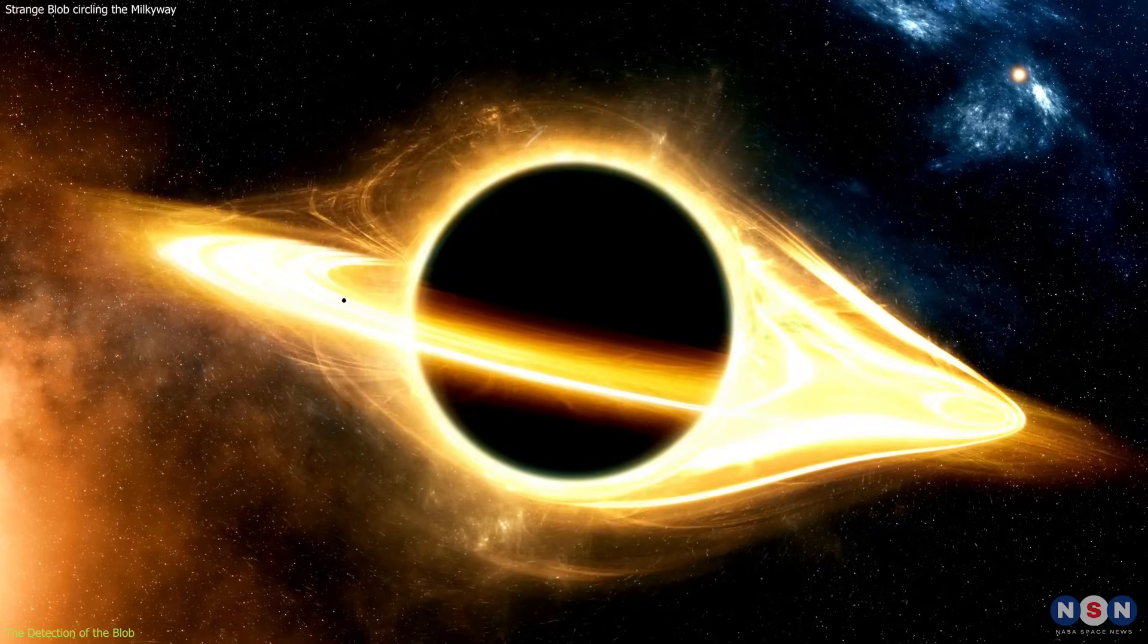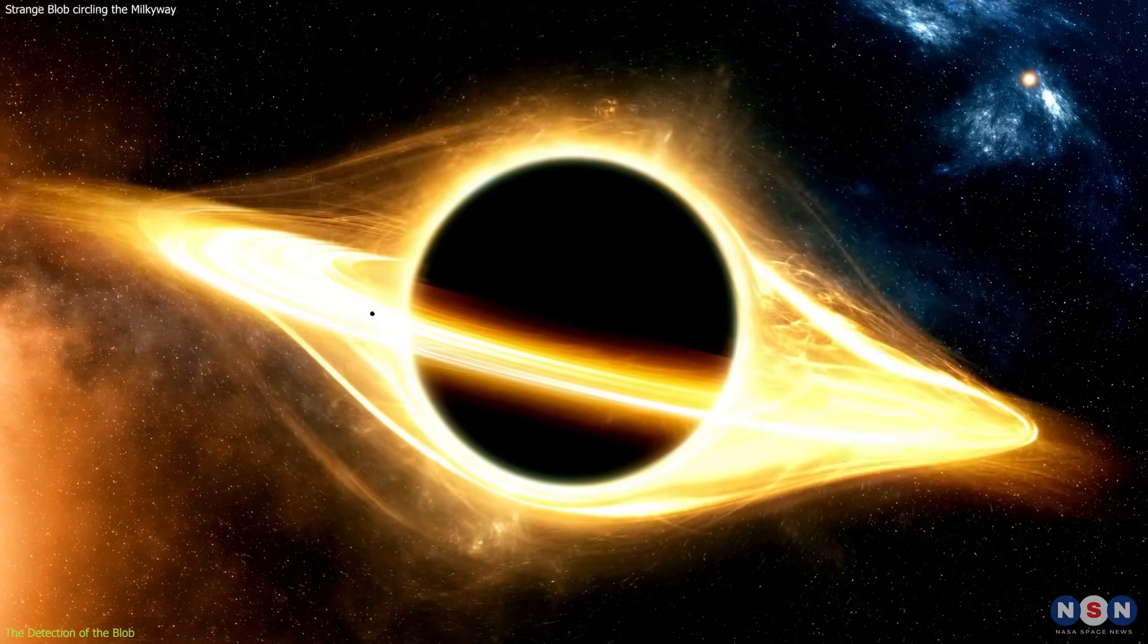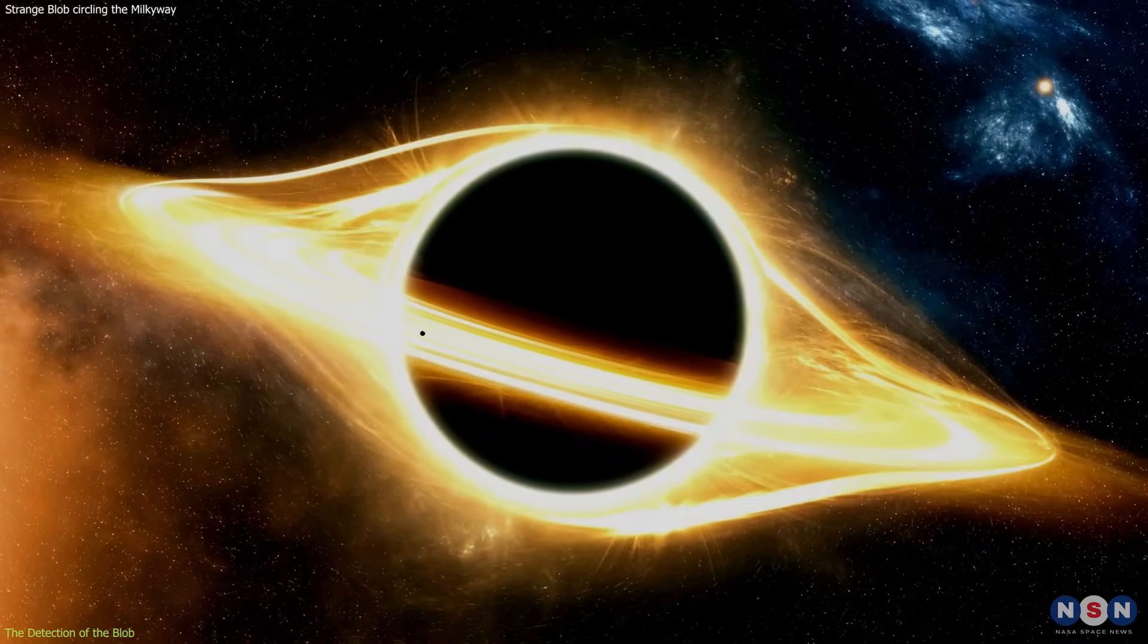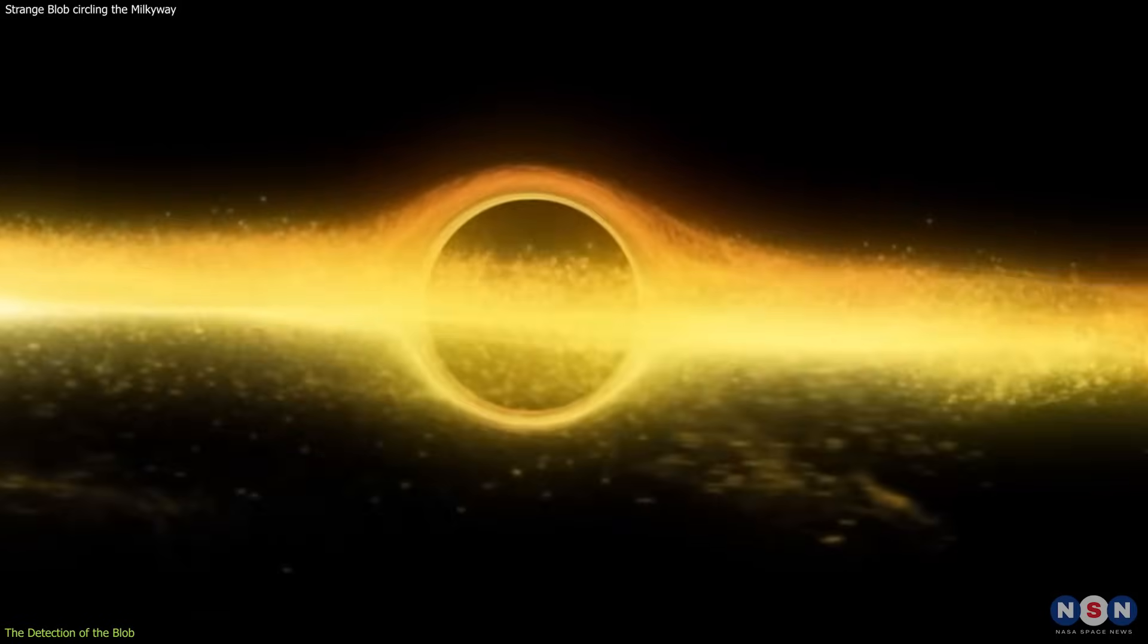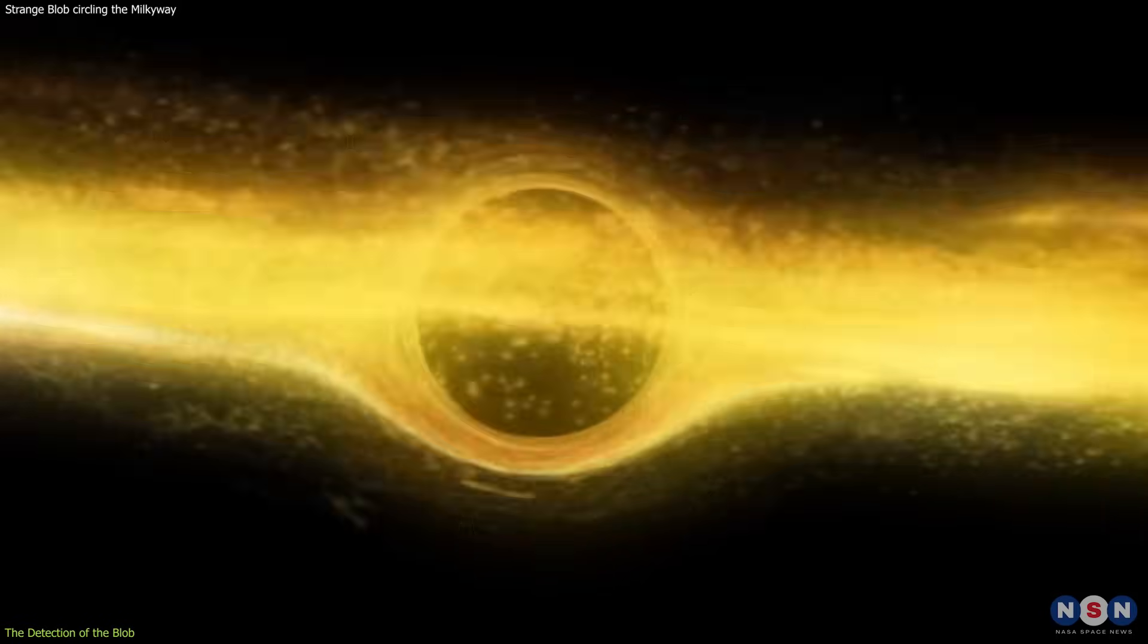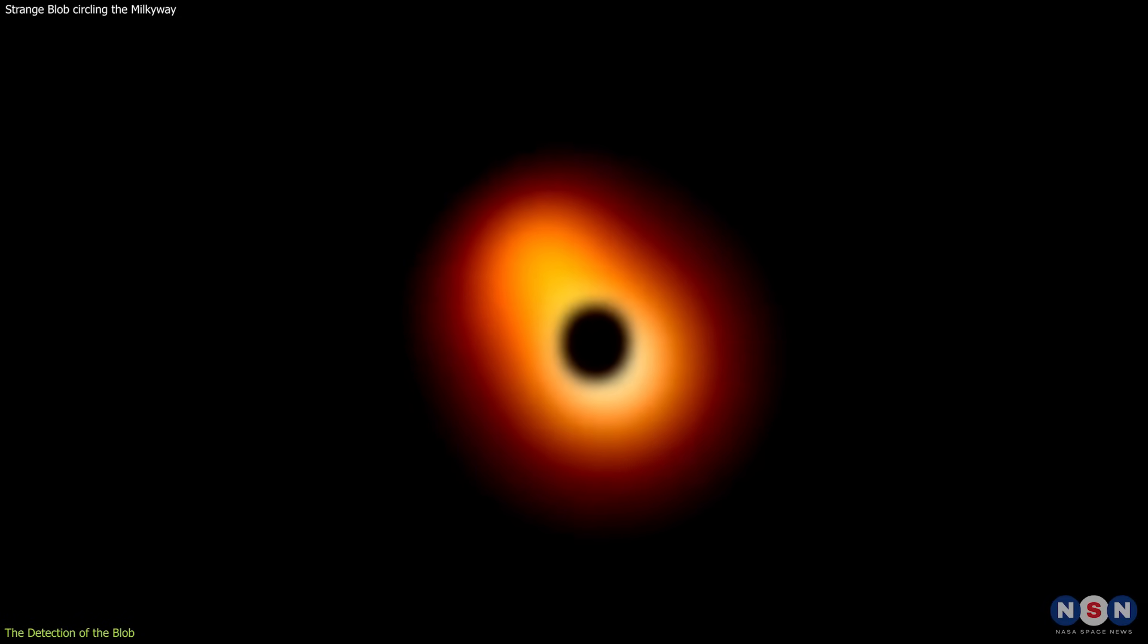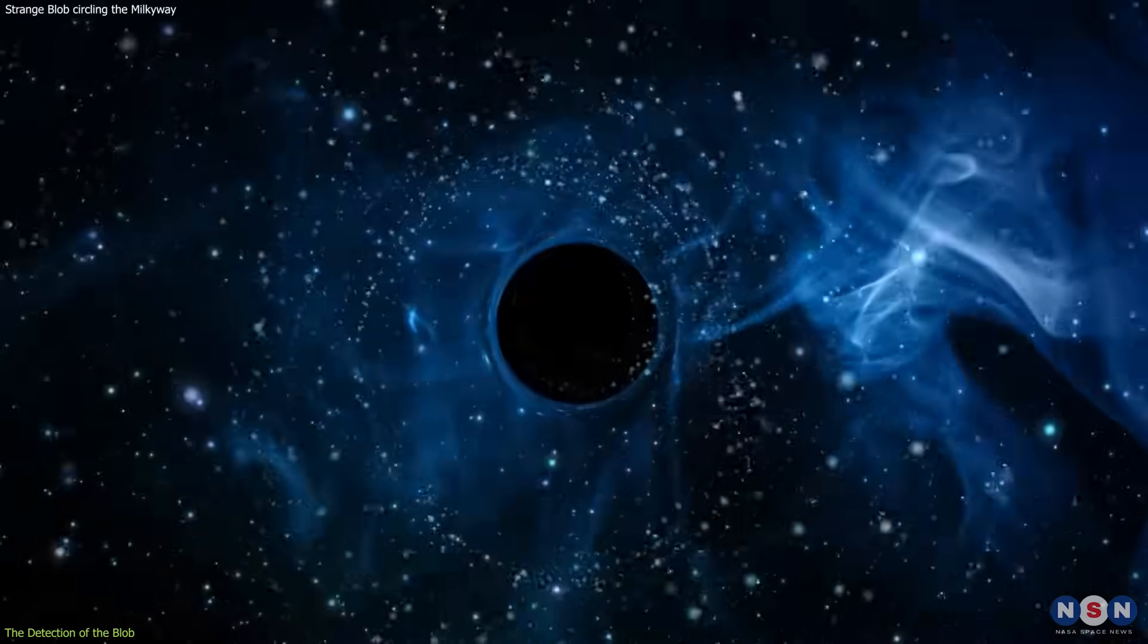So the black hole is very far away, and very massive, but also very quiet. Unlike some other supermassive black holes that are very active and bright, Sagittarius A-star is surrounded by very little matter and is feeding very slowly.